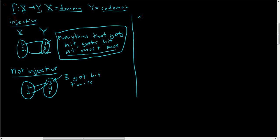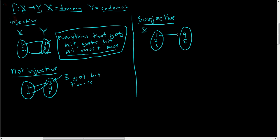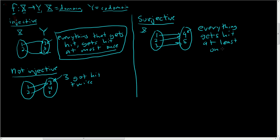Now let's look at surjective. We have capital X here with 1, 2, 3, and over here capital Y with just 4 and 5. Let's send 1 to 4, 2 to 4, and 3 to 5. In this case it's obviously not injective because 4 got hit twice. But you'll notice something — everything got hit at least once. So surjective means everything gets hit at least once.